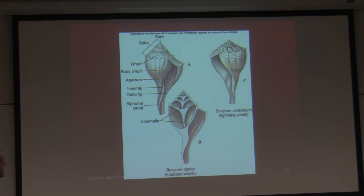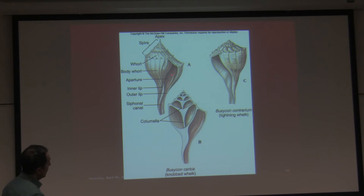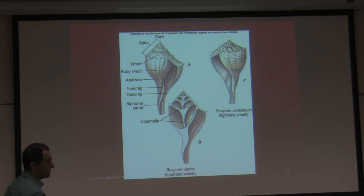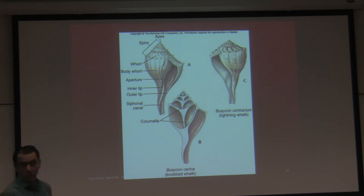Here again: the sinistral shell and dextral shell. Looking at the apex on top with the aperture here and the whorl going counterclockwise — that is a dextral shell. This is a sinistral shell — aperture here and the whorl is going clockwise. Very rare; if you go out in nature you will rarely see one.